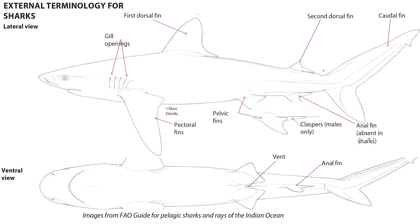Not all shark species have a second dorsal fin and an anal fin, but the vast majority do. Other features we can see on this illustration are also their gill openings, which are situated just behind their head. This is unique to sharks and rays to have these exposed gill openings. On the ventral view, we can see the shark's vent, which is where waste is deposited and also where fertilization happens for females.